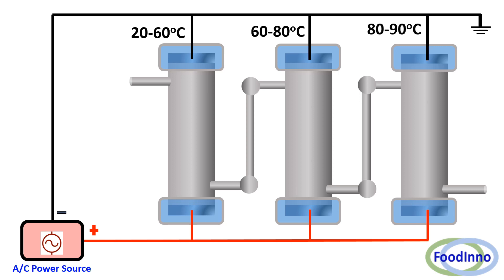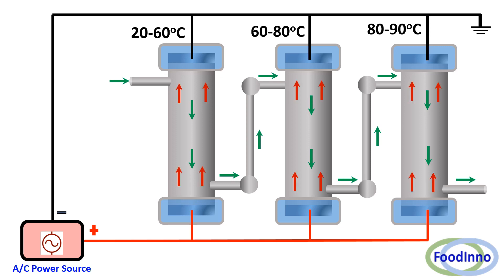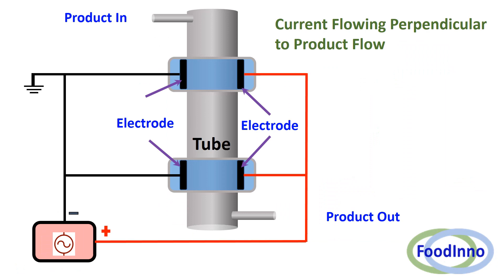Product and current flow directions are also shown in this diagram. In this ohmic heating configuration, current is flowing perpendicular to the product flow, and we could observe two ohmic heating sections.